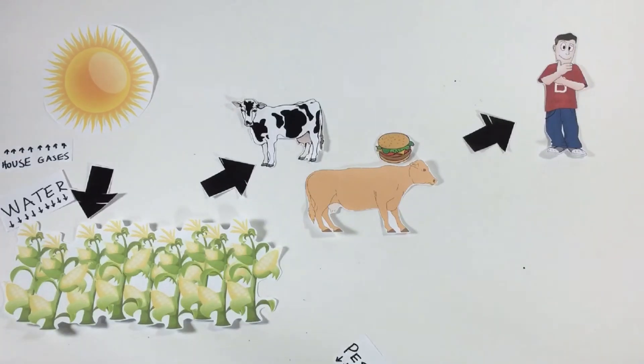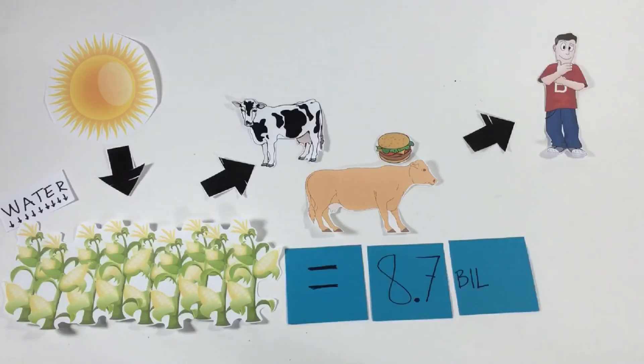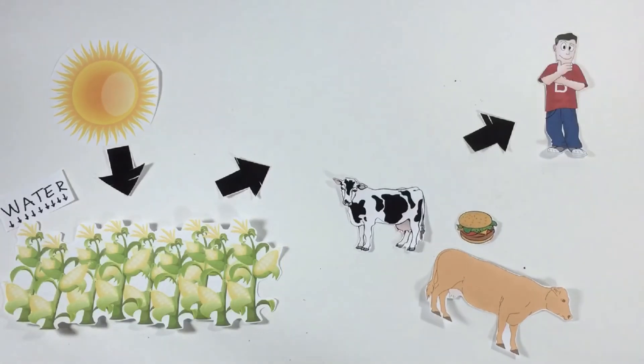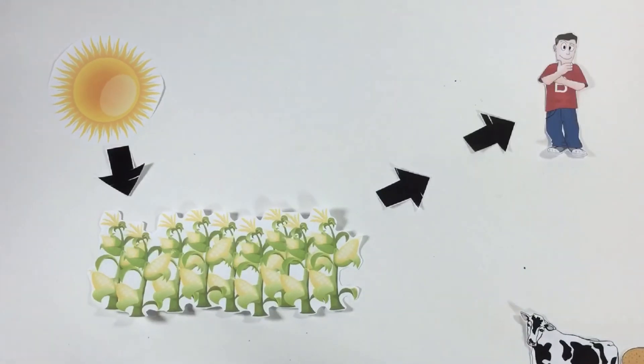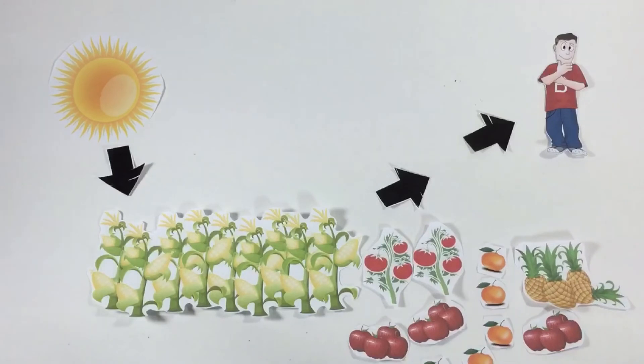In fact, the amount of grain fed to the world's cow population could feed 8.7 billion human beings, and that's just the cows. By eating plants directly, we can get rid of the middle cow and have enough food for all. Eating animals is inefficient. Eating plants is sustainable.